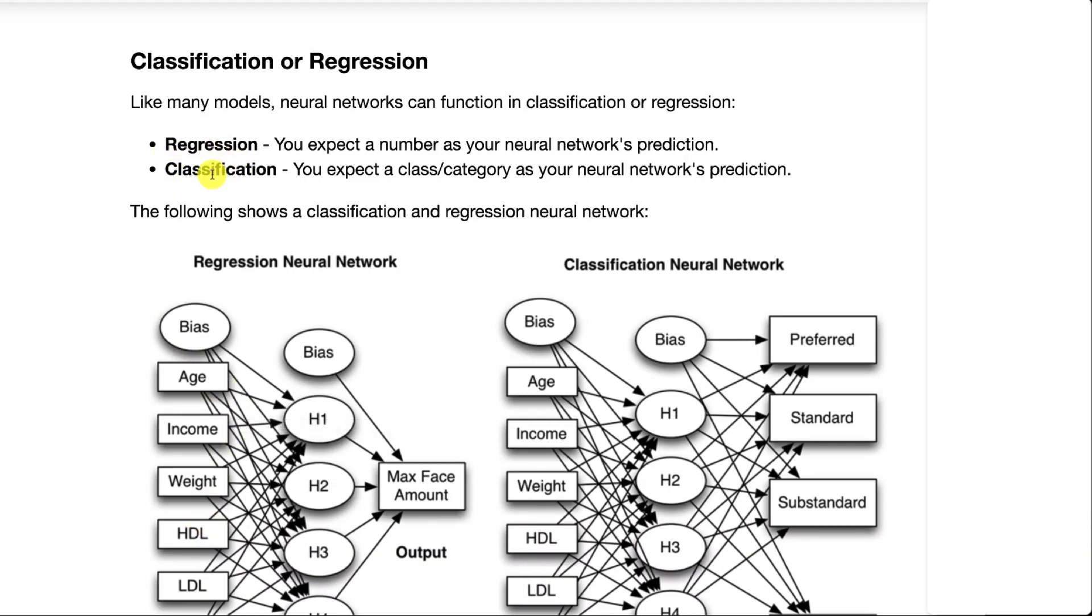Neural networks do this too. The output neurons of the neural network become either the single regression output or the classification.